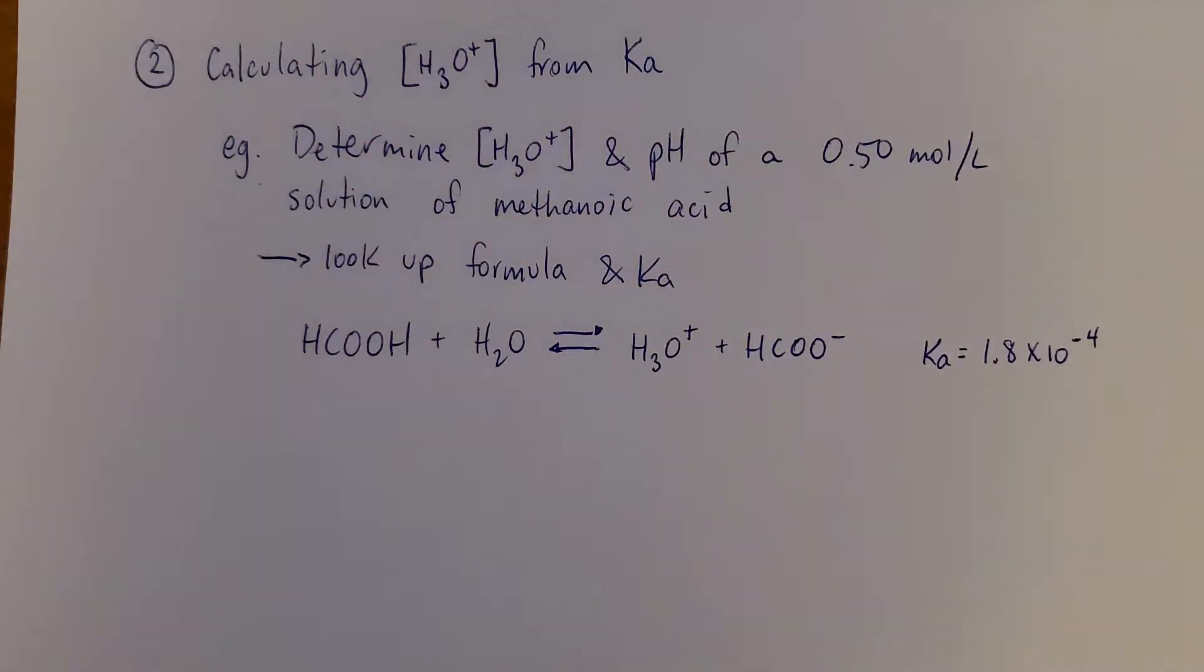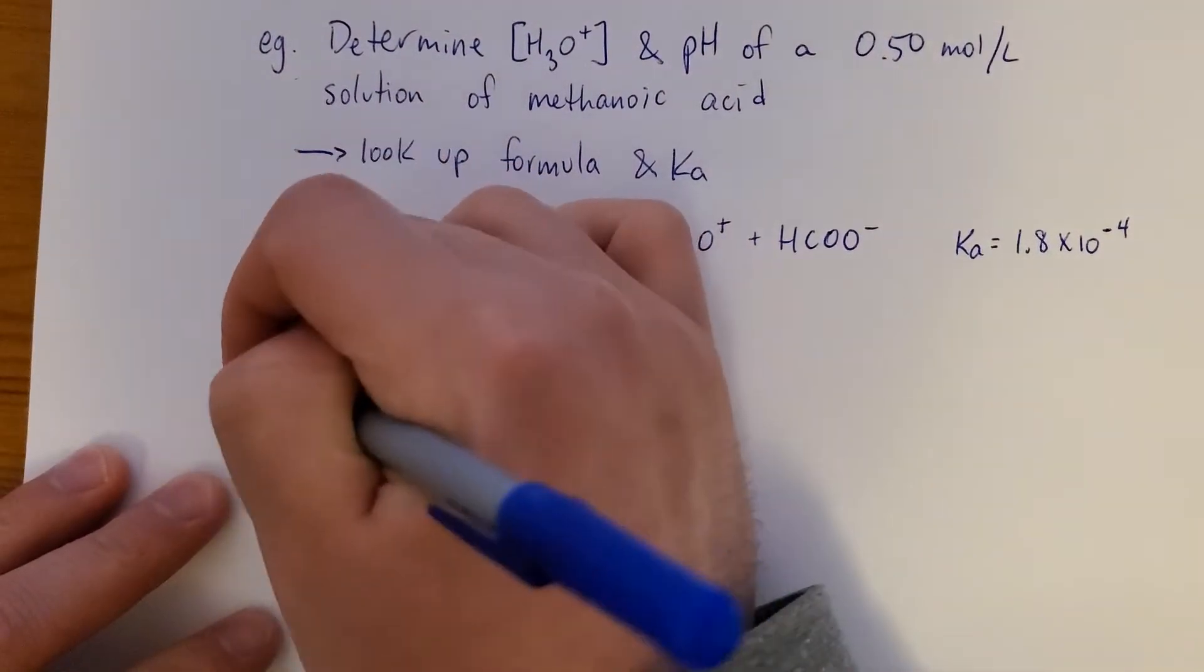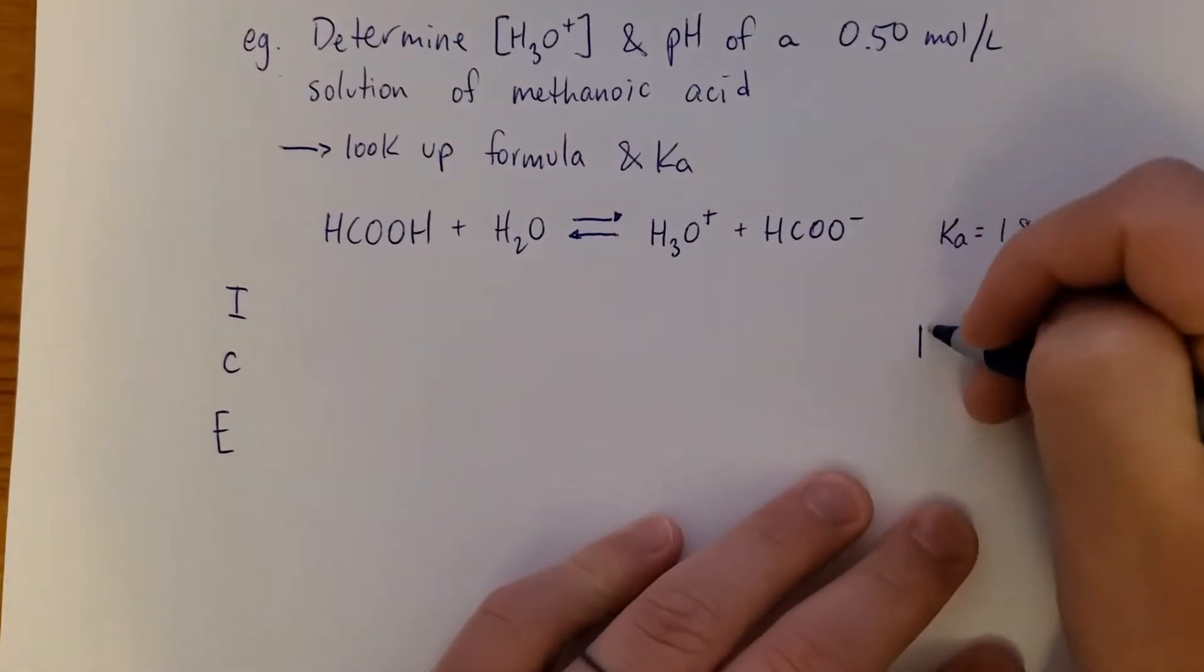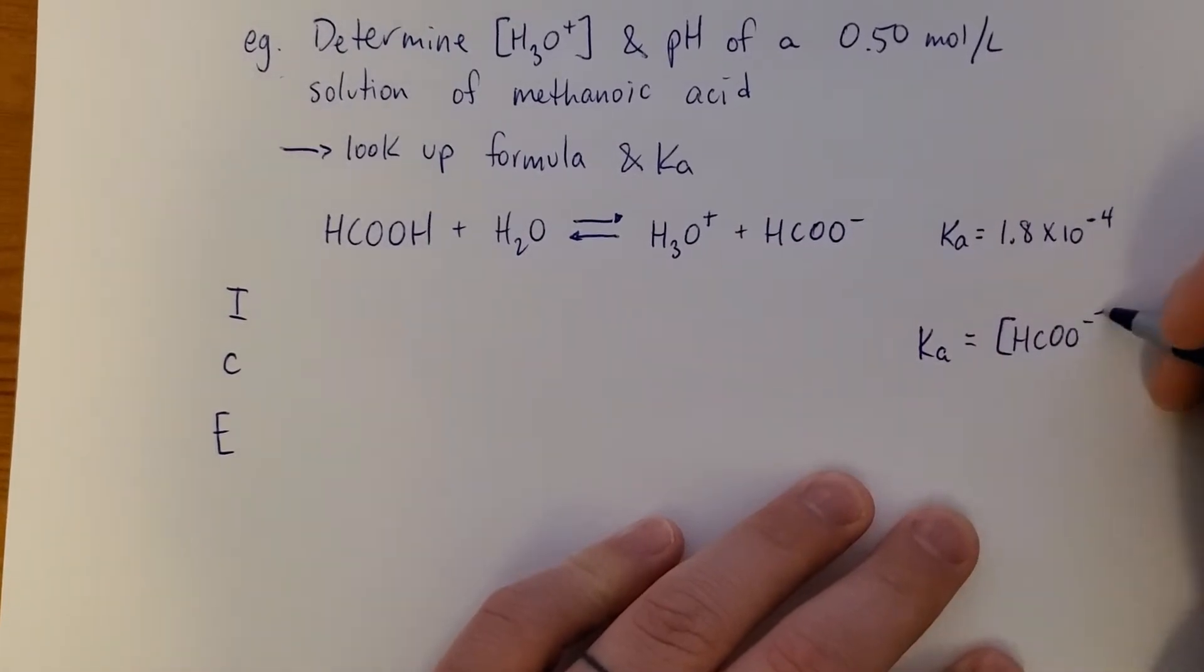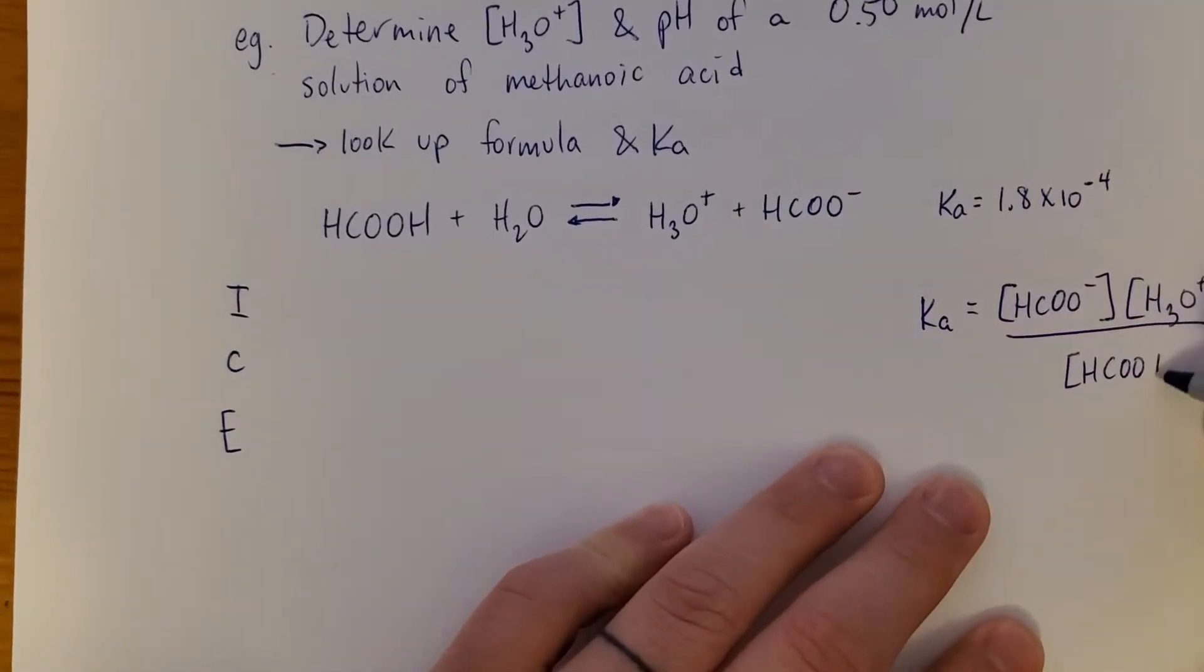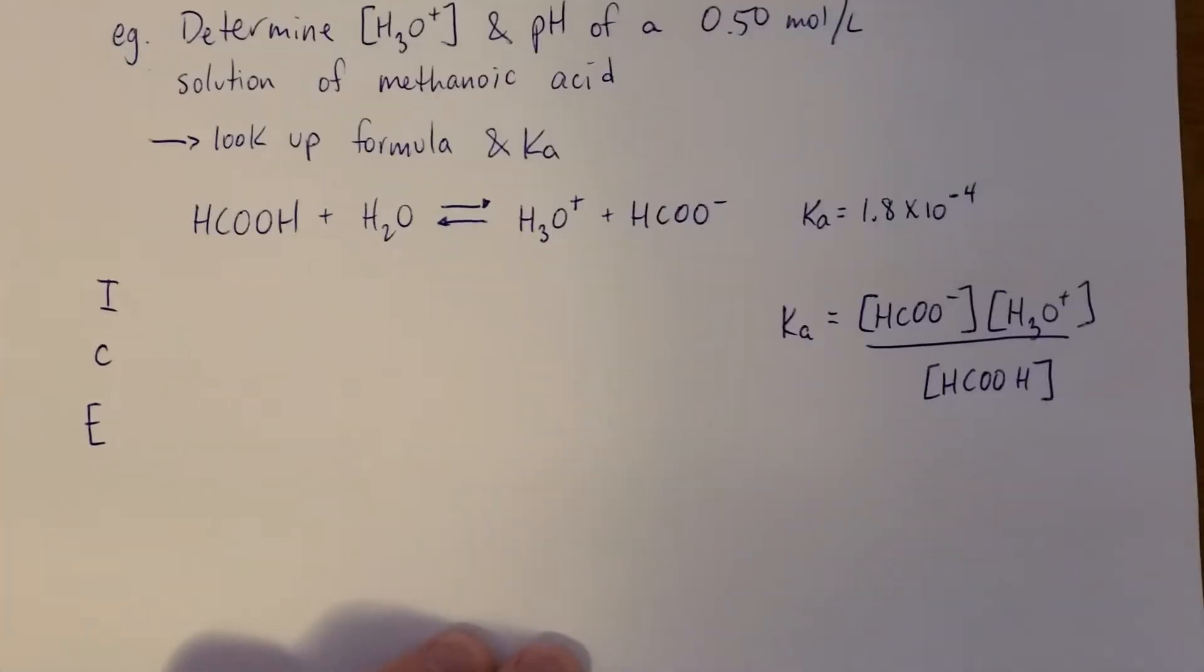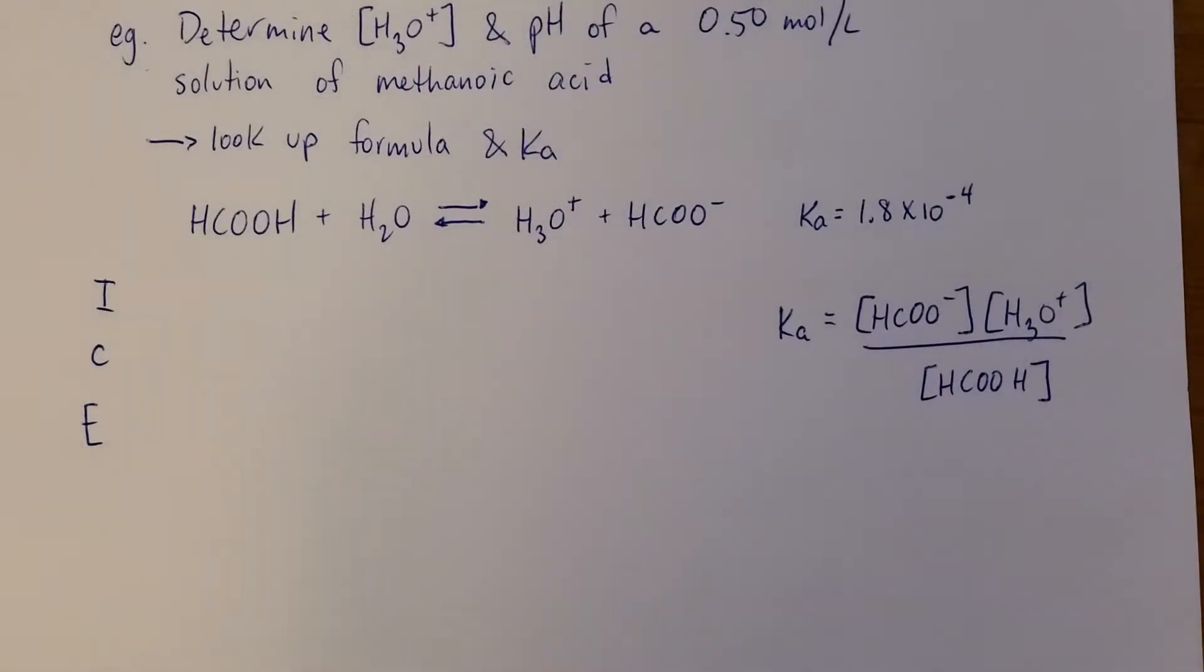So, how are we going to find the H3O+ concentration? Well, we're going to use Ka and an ice table. Because remember, Ka is the [HCOO-] concentration times the [H3O+] concentration divided by the [HCOOH] concentration. So we're going to pull it all together. These are great examples that require everything we've learned, pretty much.